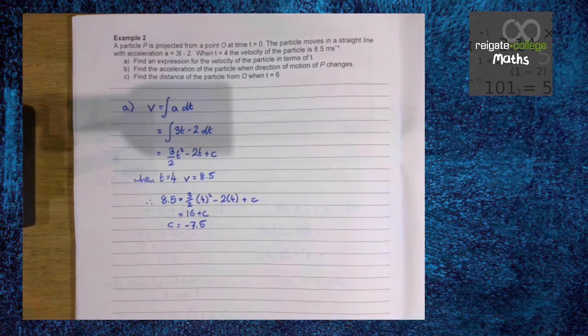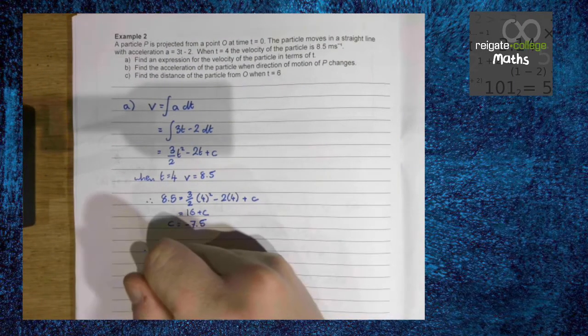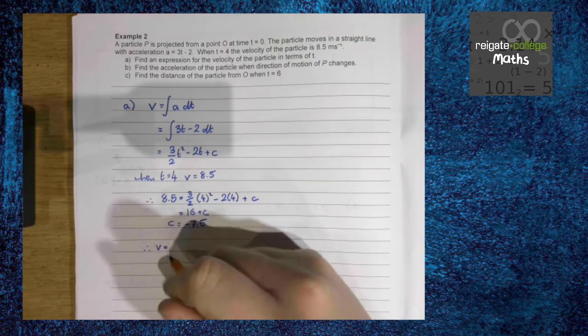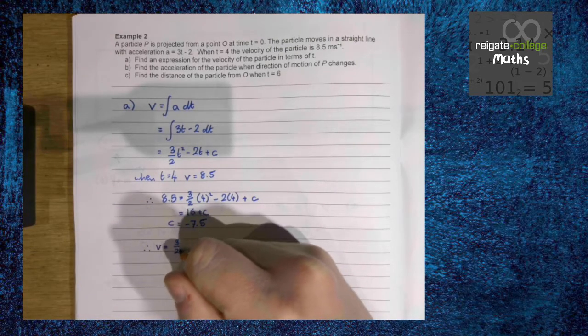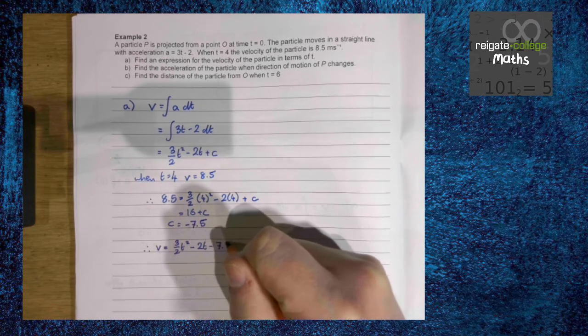Obviously, we could write that as 15 over 2 if we wanted to, but either is fine. So therefore, v equals 3 over 2, t squared minus 2 times t minus 7.5.